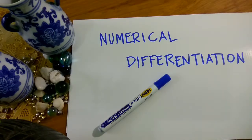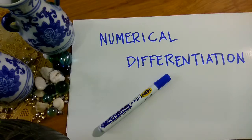Hey guys, for today's video I'm going to show to you how to derive approximately a function by the three popular methods of numerical differentiation: first the forward, second is the backward, and third is the central difference. So first let's go to the forward difference.